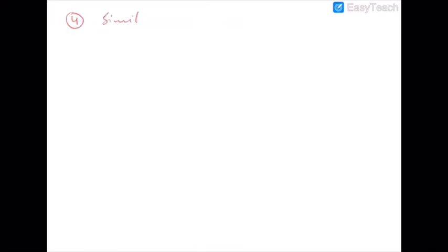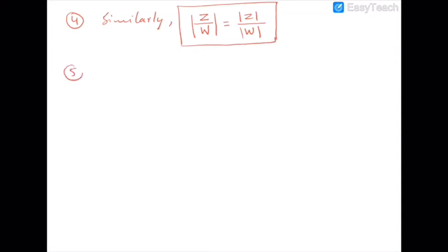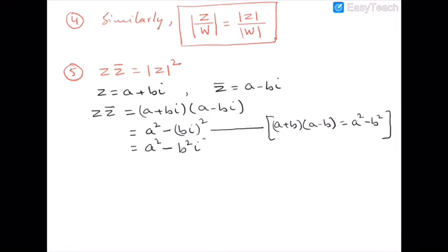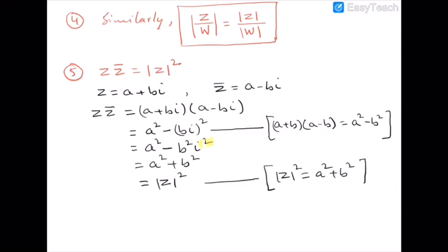Similarly, we can prove that |z/w| = |z|/|w|. Our fifth property is z·z̄ = |z|². To prove this, let z = a + bi, so its conjugate is a − bi. Then z·z̄ = (a + bi)(a − bi) = a² − (bi)² = a² + b², since i² = −1. This equals |z|² from the modulus formula. Therefore, z·z̄ = |z|².